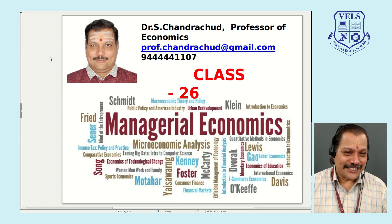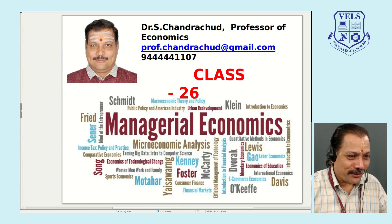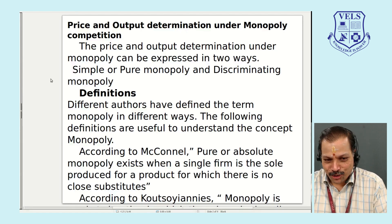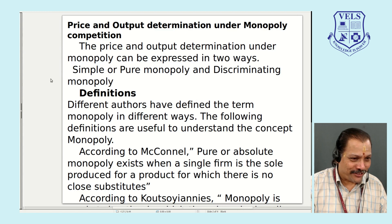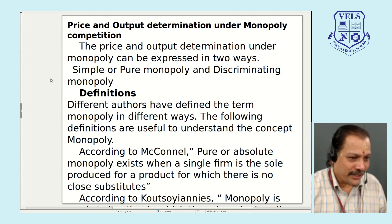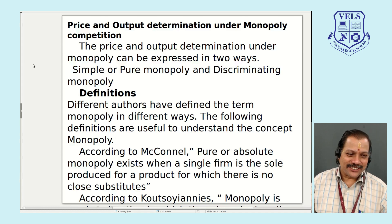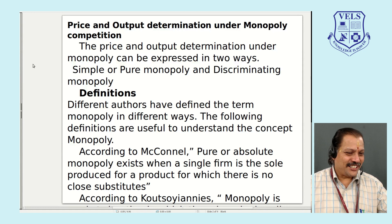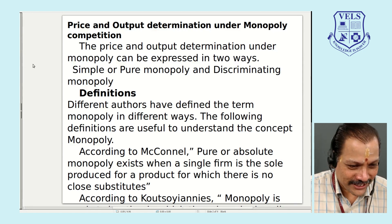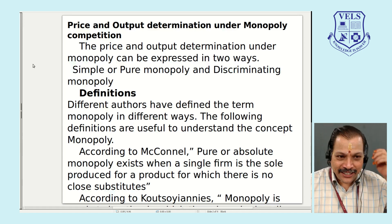Mono means single. A single seller market is called monopoly competition. In this particular class, we are going to study about what is monopoly, how it can be defined, what are the features of monopoly, how price is determined under monopoly, what is price discrimination, what is the condition for price discrimination, and what are the different degrees of price discrimination.